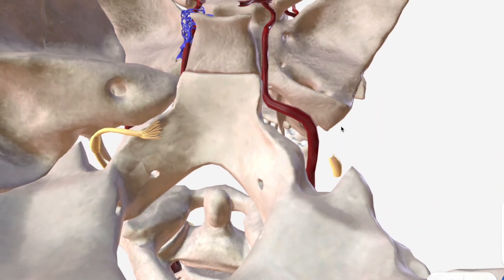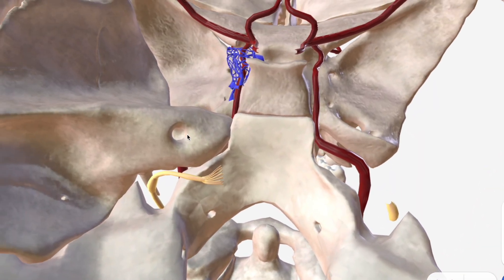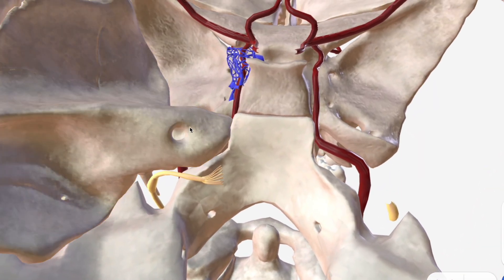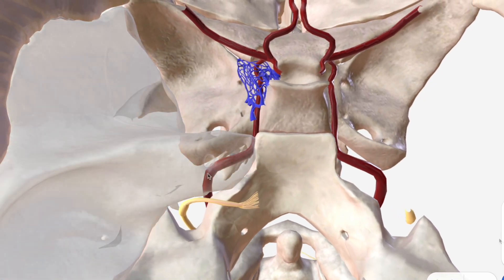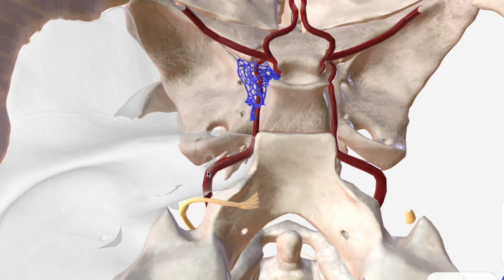This part of the temporal bone is called the petrous portion of the temporal bone. As the internal carotid comes through the carotid canal, it then passes through the petrous portion of the temporal bone — that's C2, which is also called the petrous segment.